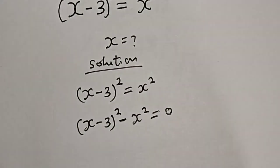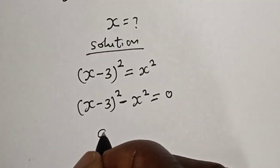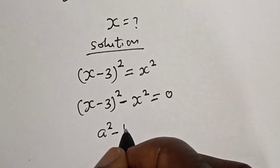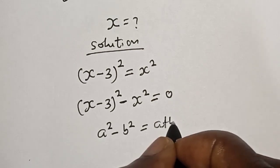Now take note of this exponential rule that a square minus b square is equal to a plus b multiplied by a minus b.